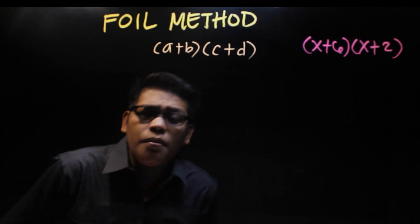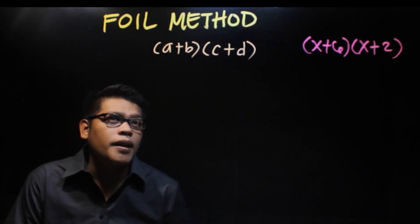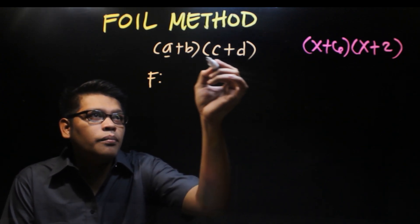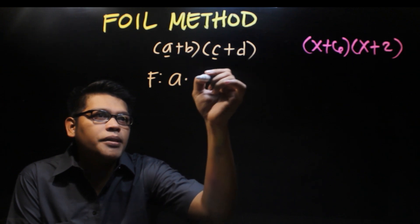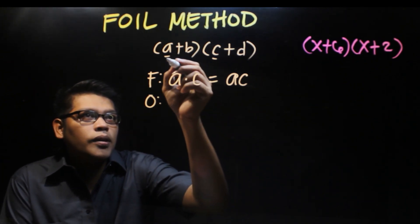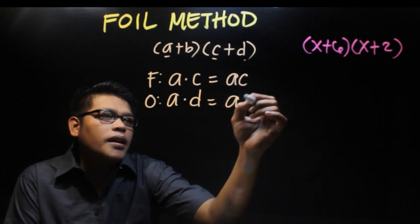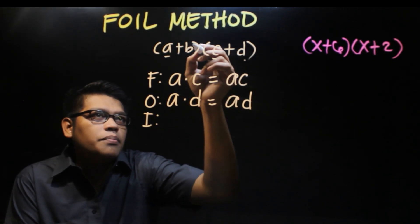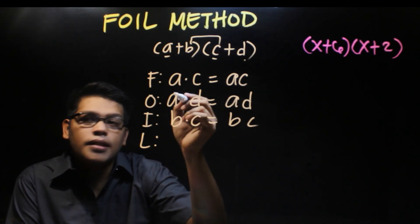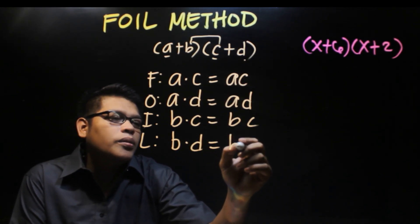Let's see. Using the foil method, if we have two binomials (a+b) and (c+d), we multiply using foil. First term times first term: a times c equals ac. O for outside: a times d equals ad. I for inner or inside: b times c equals bc. L for last: b times d equals bd.